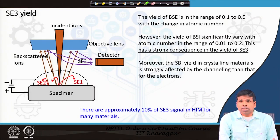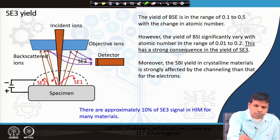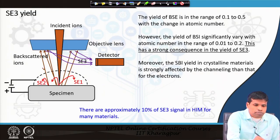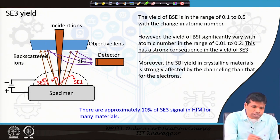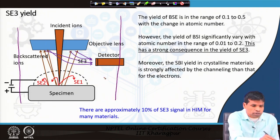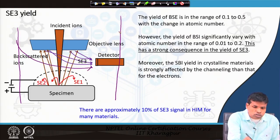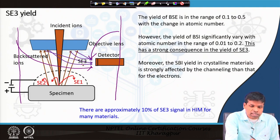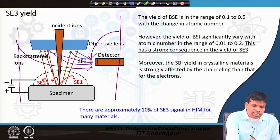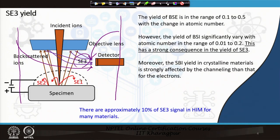There are also SC3 electrons, which we have discussed in scanning electron microscopy. Once backscattered electrons or backscattered ions come out of the specimen, they can strike the pole pieces or objective lens, or the wall of the chamber, and when they strike there they also produce secondary electrons. These are termed SC3 because their energy is again less than 50 eV. We can differentiate SC3 contribution from SC2 and SC1 by putting a grid around the sample.